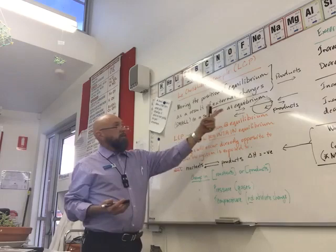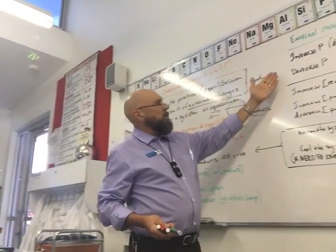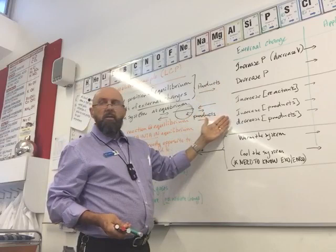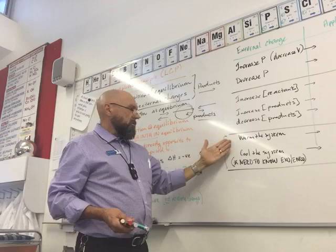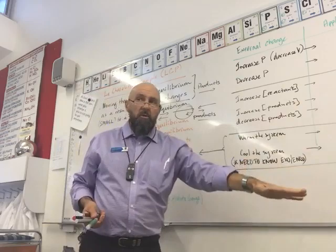If you don't understand Le Chatelier's Principle, you can't understand how to move the position of equilibrium. Because as you can see over here — do I increase pressure? Do I decrease pressure? Do I increase concentration of reactants? Or do I take products away as they're produced? Some of these are logical. Or do I heat it up? Or do I cool down the system? What do I do to push equilibrium to the right?